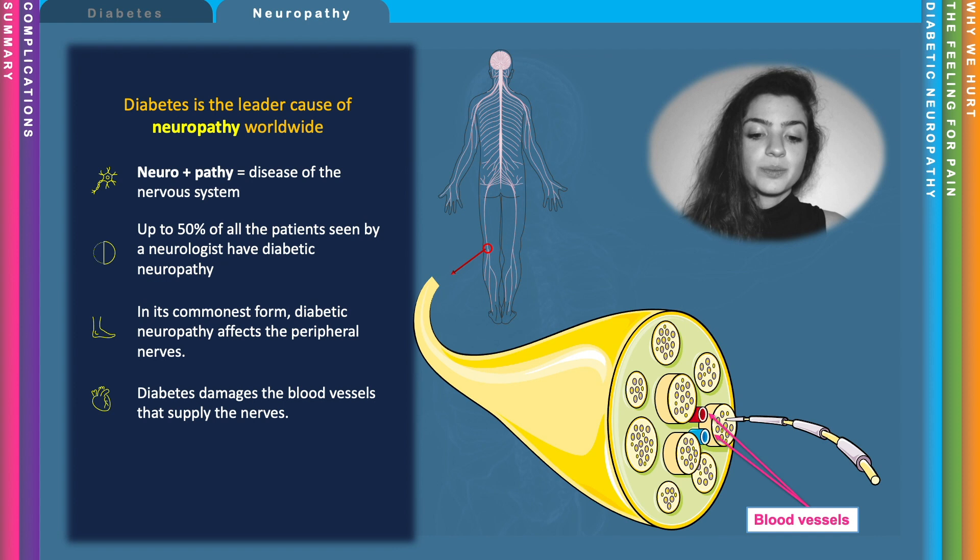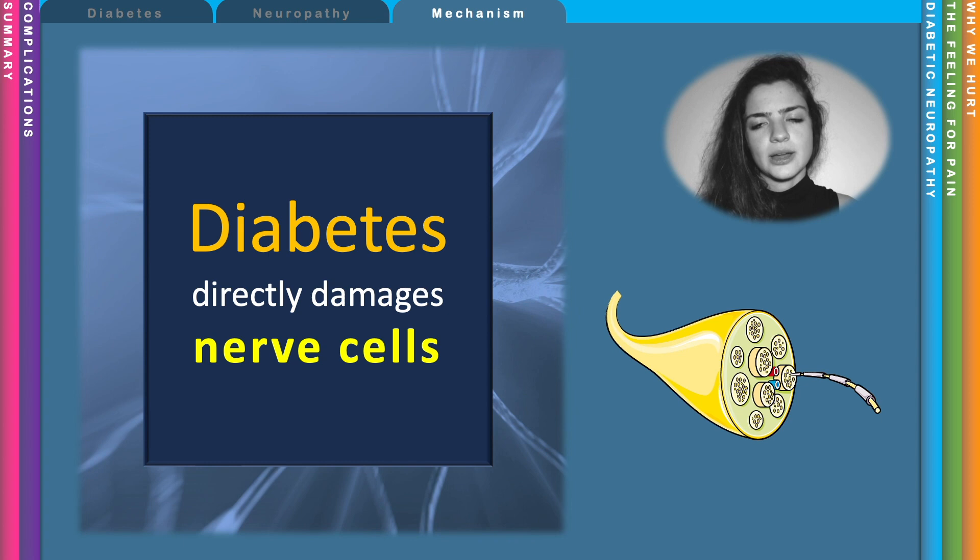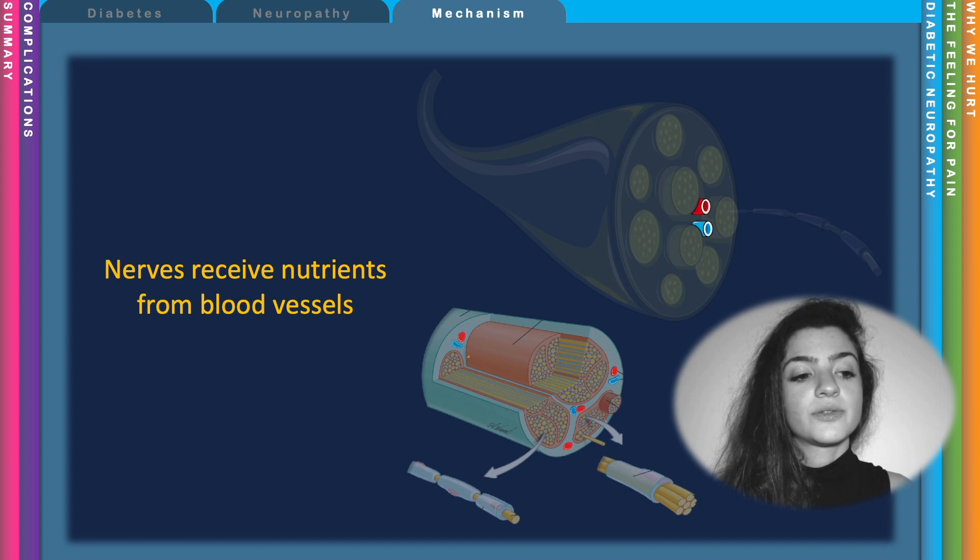Diabetes damages nerves in two ways: it damages the blood vessels that supply nerves, but it also damages nerve cells directly. Let's see how diabetes directly damages nerve cells.